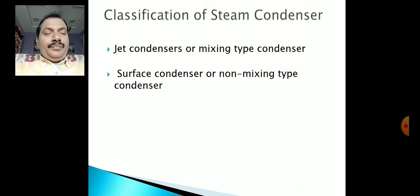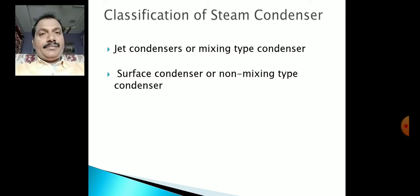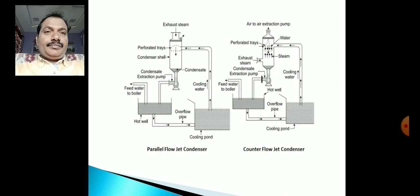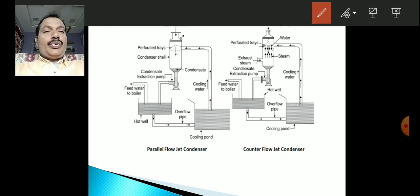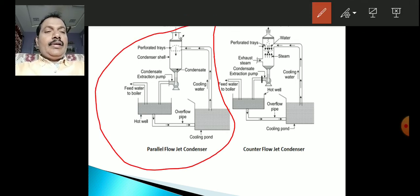There are two types of steam condensers: jet condenser and surface condenser. Jet condensers are also called mixing type condensers, while surface condensers are called non-mixing type condensers. The jet condenser has two varieties: parallel flow type and counter flow type. Both diagrams are shown here.